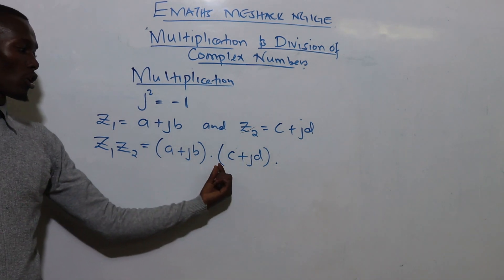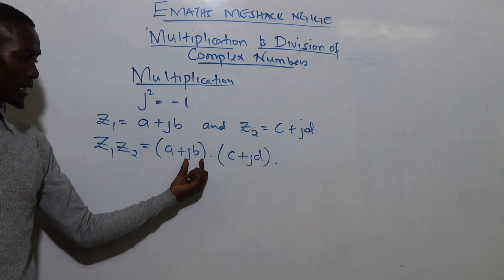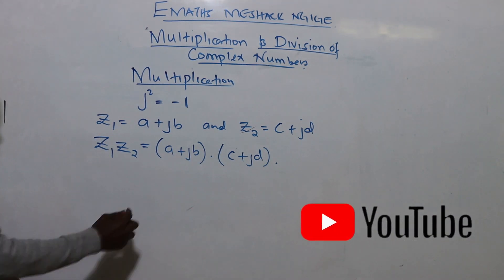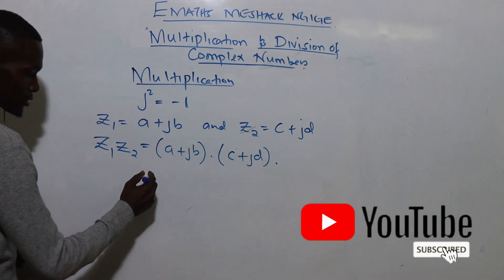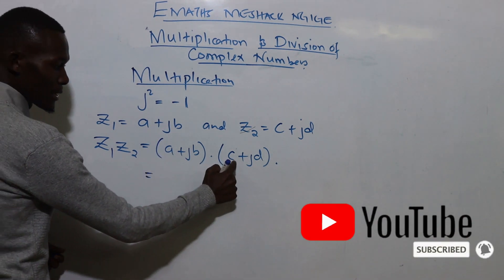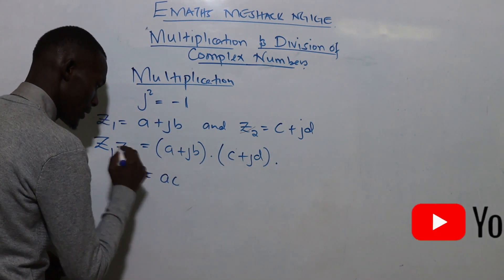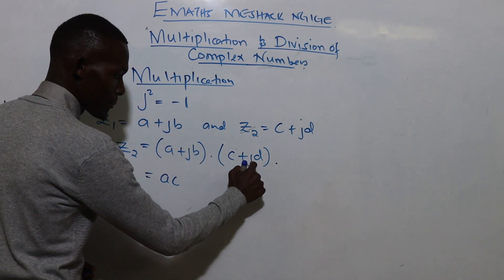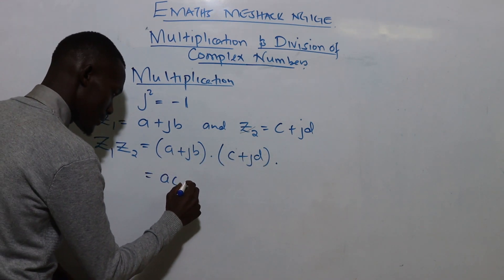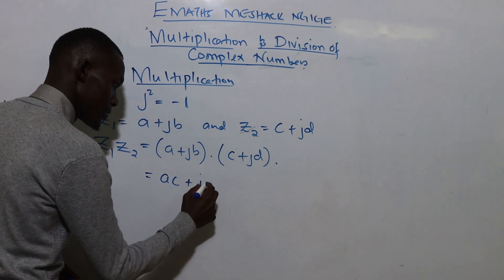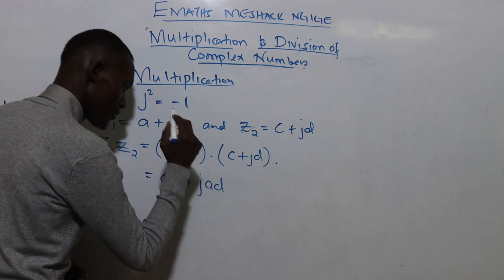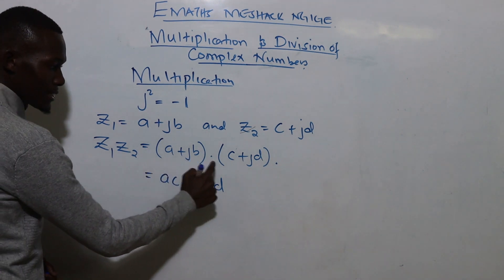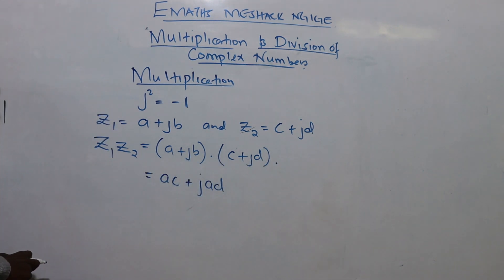Now we open the bracket: the first term opens the whole bracket, then the second term also opens the same bracket. Starting with the first term a: a times c gives us ac, then a multiplied by jd gives us jad.